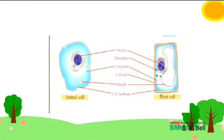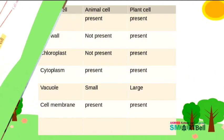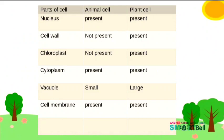When comparing an animal cell and a plant cell: cell wall and chloroplasts are found only in plant cells, not in animal cells. Cell membrane, cytoplasm, nucleus, and vacuoles are present in both. The size of the vacuole is small in animal cells but large in plant cells. This is the main comparison between animal and plant cells.